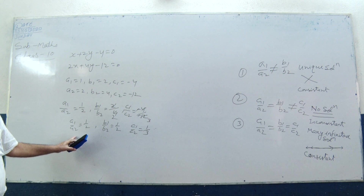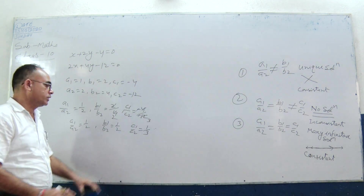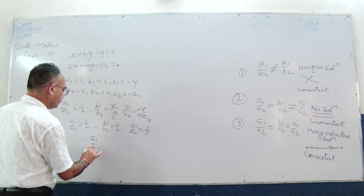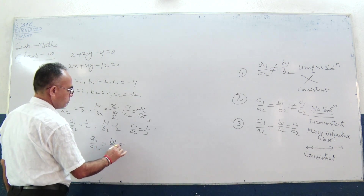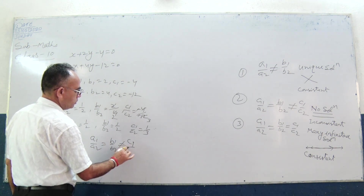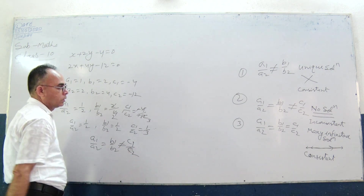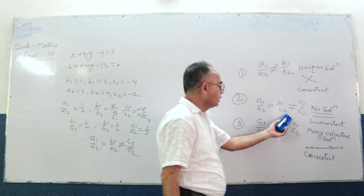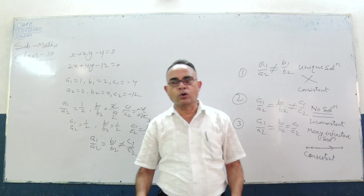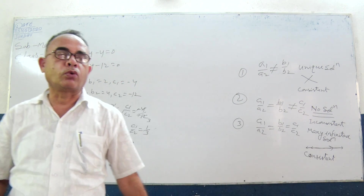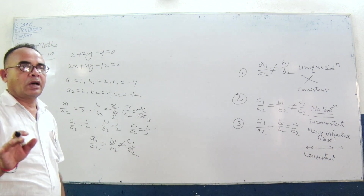Here A1 by A2 is equal to B1 by B2 but not equal to C1 by C2. So this is the second situation: what do we have? No solution. We have no solution.